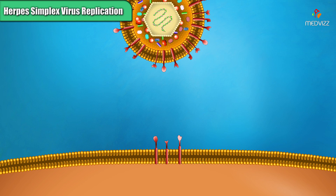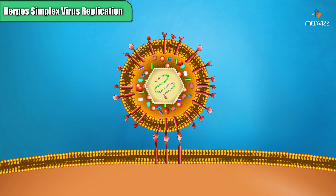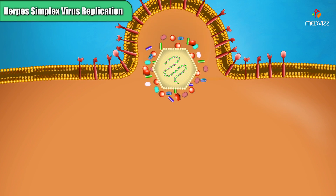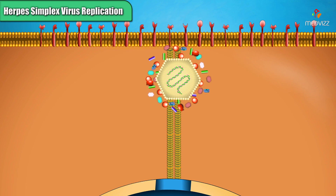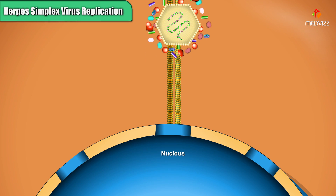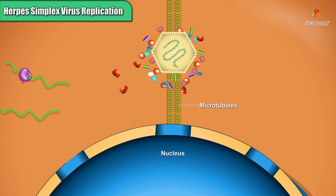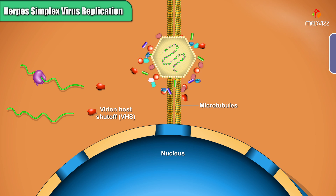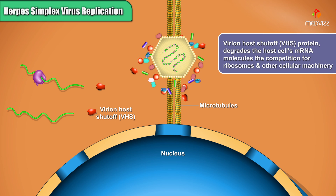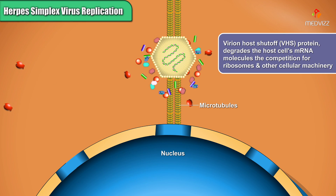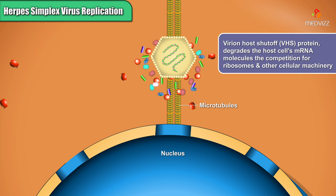The herpes virion can bind to several alternative receptor molecules in the host cell membrane, after which the envelope fuses with the host membrane, releasing the capsid into the cytoplasm. The capsid travels down a scaffold of microtubules to the nuclear membrane. At the same time, a protein from the tegument called virion host shutoff, or VHS protein, degrades the host cell's mRNA molecules and thereby eliminates the competition for ribosomes and other cellular machinery.